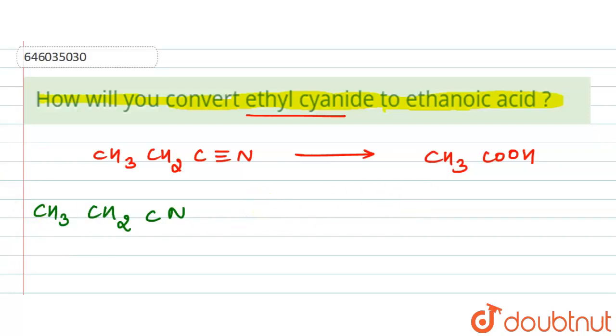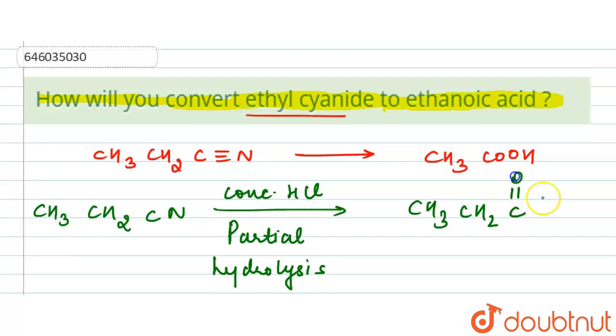Here we will have the use of concentrated HCl and we will have the partial hydrolysis. The HCl is used for the partial hydrolysis. So here we will have the formation of CH3CH2CONH2, and this is our propinamide.